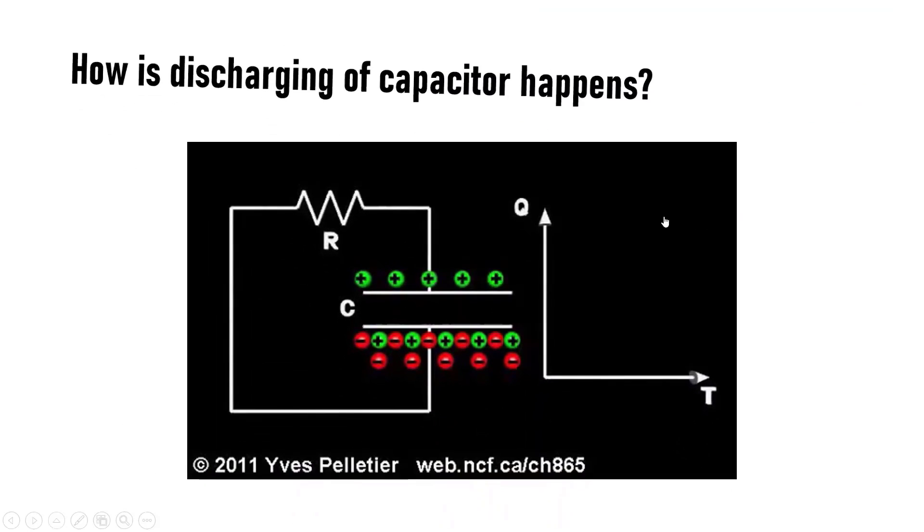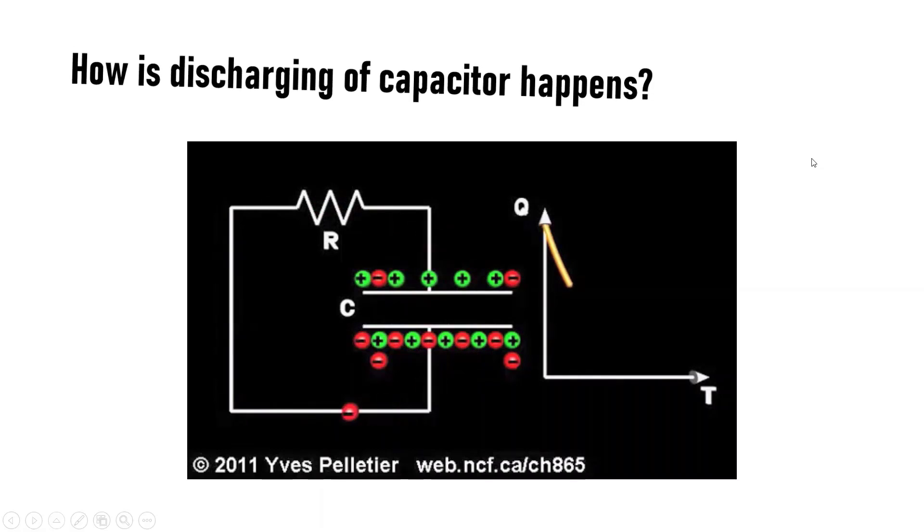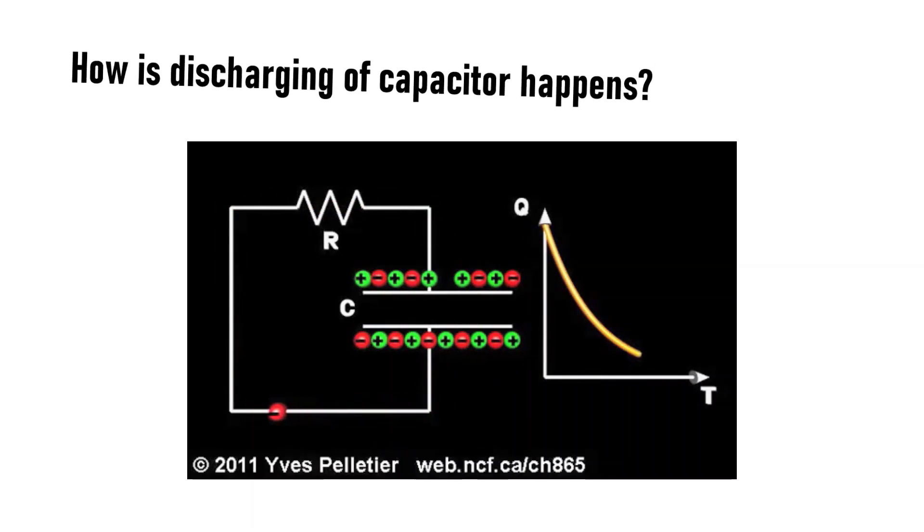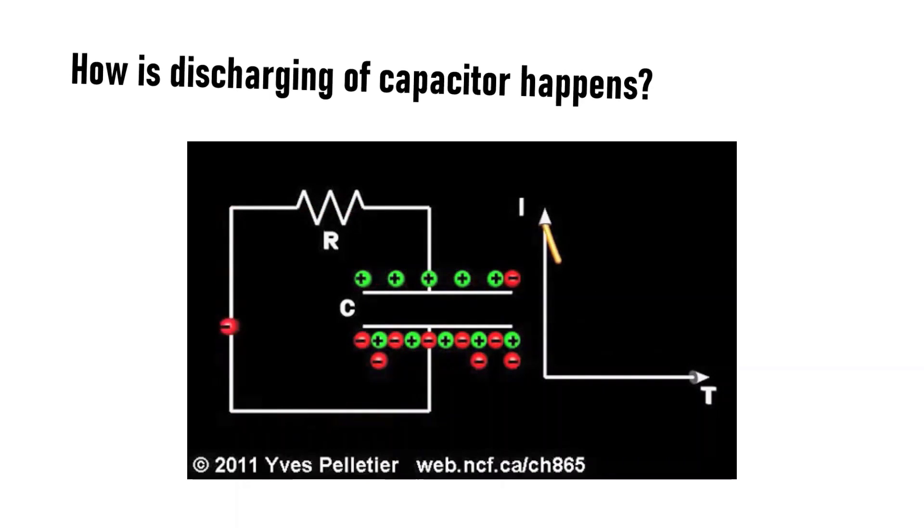Next, how does discharging of a capacitor happen? Electrons flow out from one of the plates through the resistor and neutralize another plate. This causes the potential difference to be reduced. This happens until the current through the resistor is zero. At this moment, all the charges at the plate are fully neutralized.